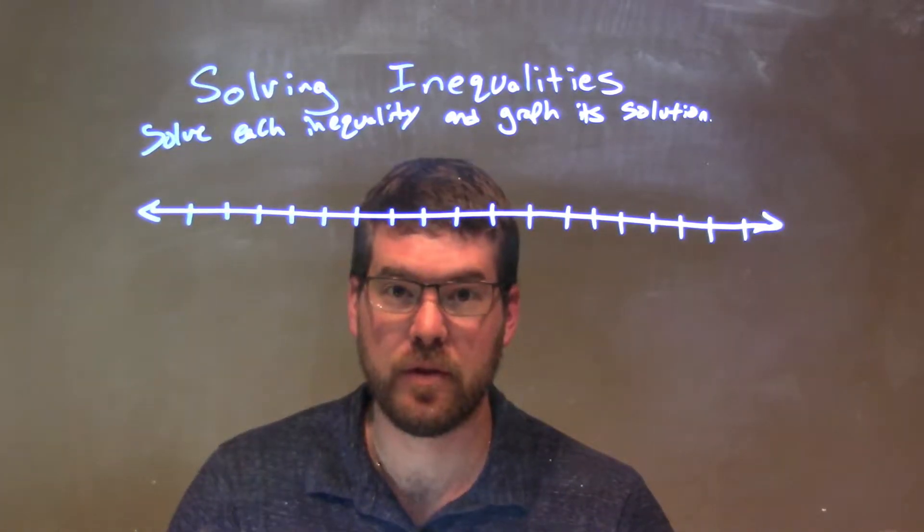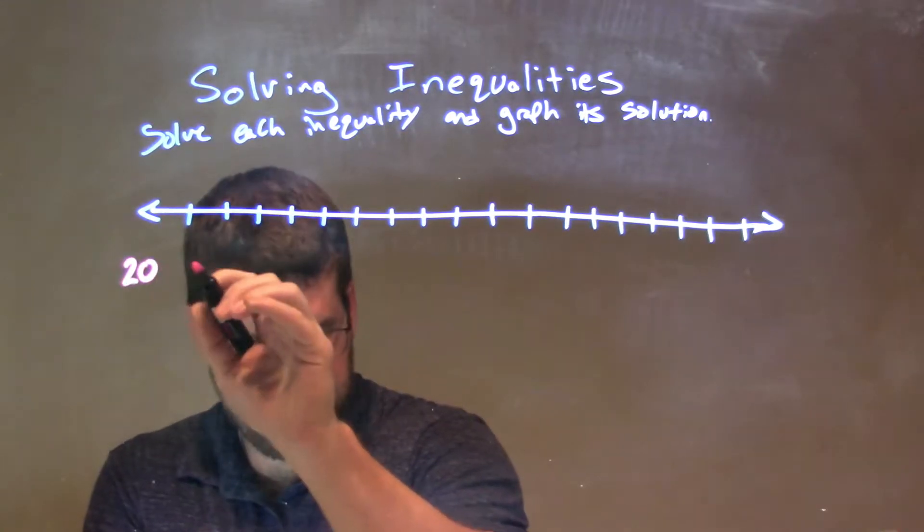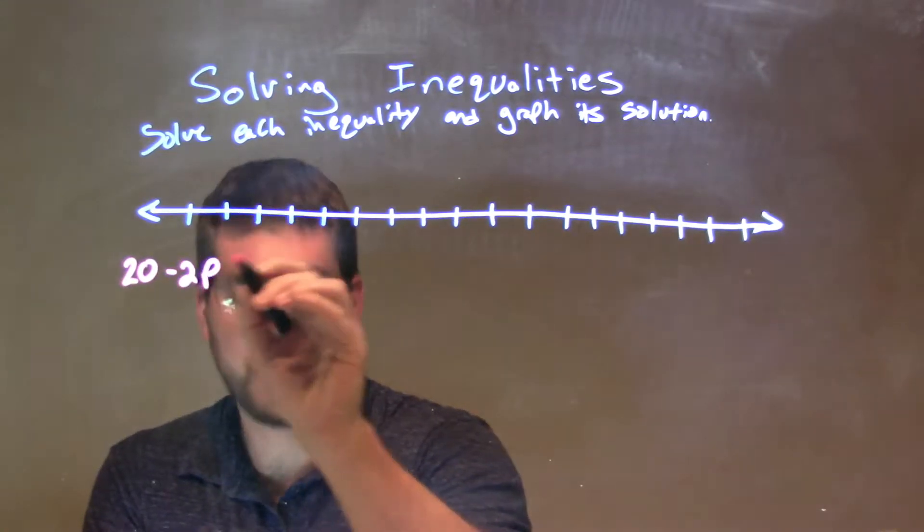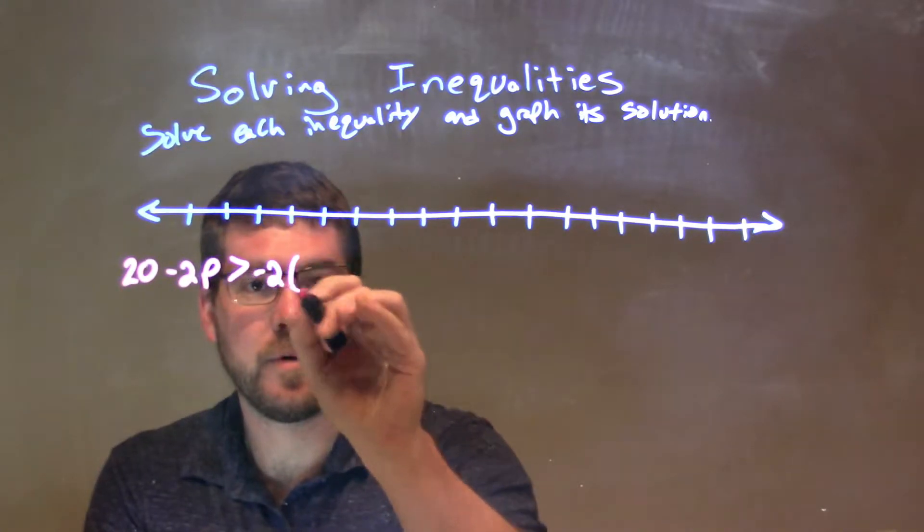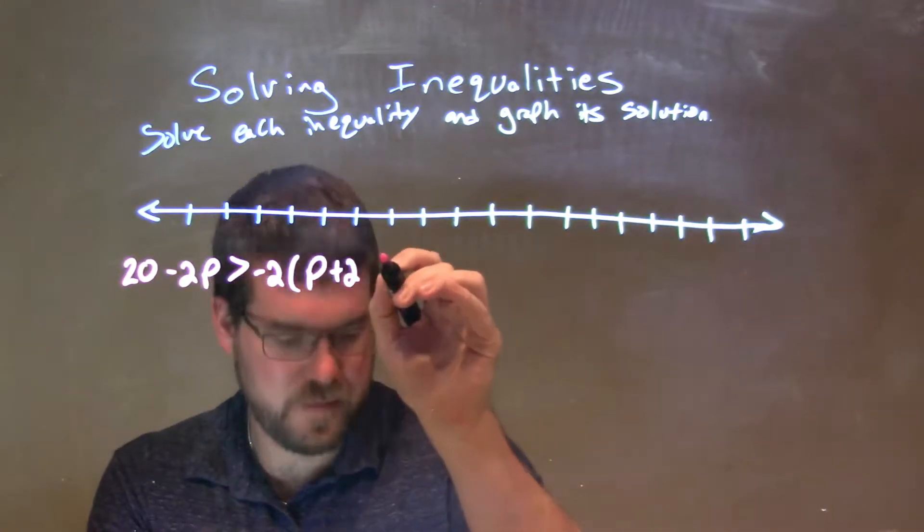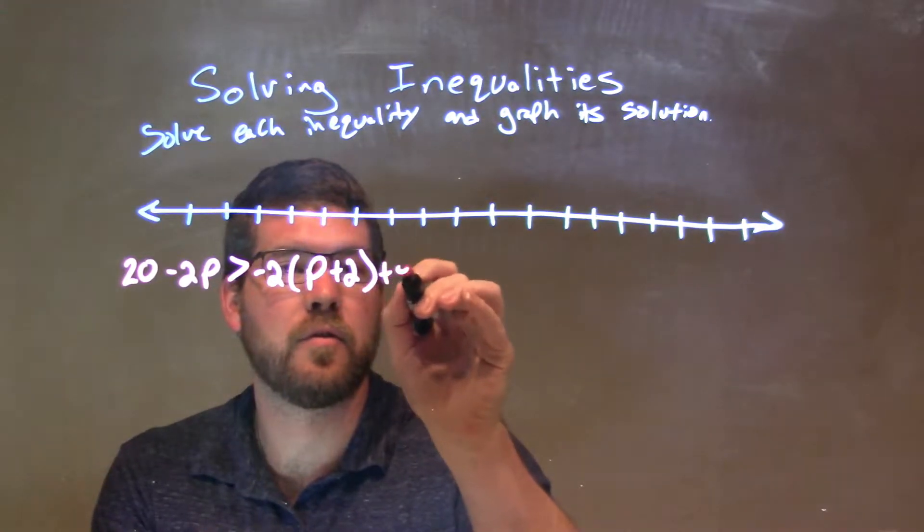So, if I was given this inequality, 20 minus 2p is greater than negative 2 times p plus 2 plus 4p.